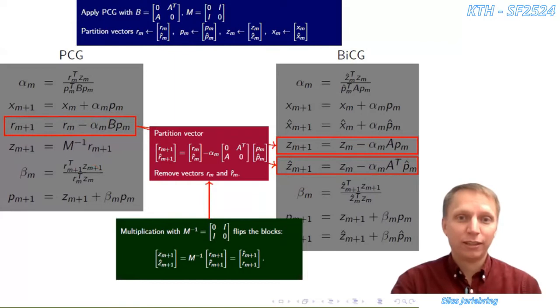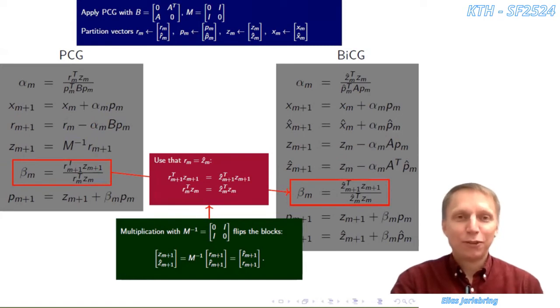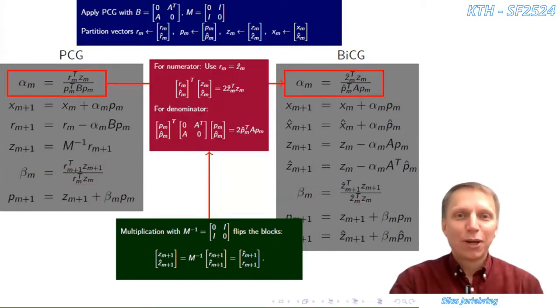Note here that we have the matrix A and A transpose in BiCG. We can translate the update of beta by just using the fact that R is Z hat and we get an expression involving Z and Z hat. Similarly, we can update alpha with Z hat, Z, P hat and P.